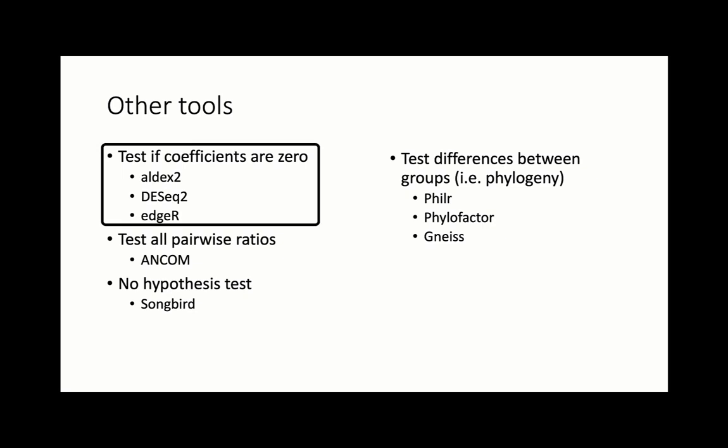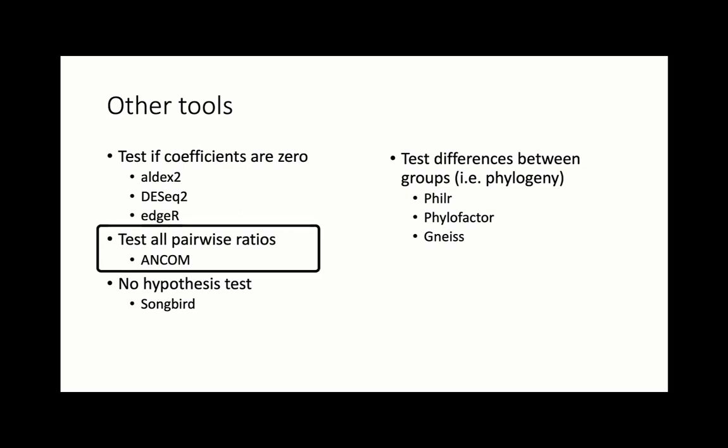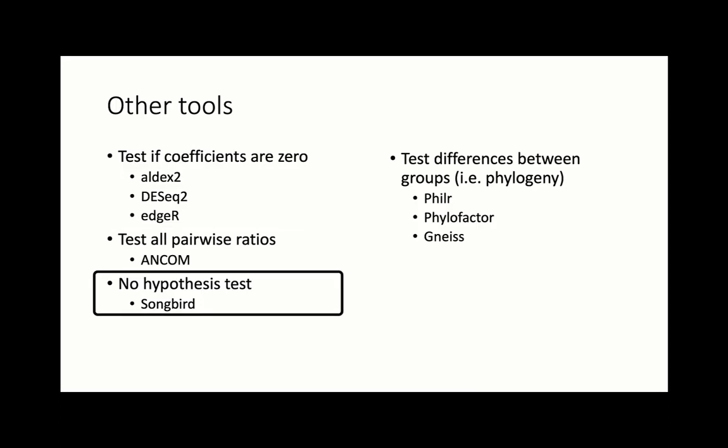While much of the content in this lecture is based on the architecture of Songbird, it is important to note the differences across differential abundance tools. Tools such as ALDEX2, DC2, and EDGEAR will test to determine if the regression coefficient is equal to zero—essentially testing if the microbial abundance has changed relative to the average microbial abundance, with the underlying assumption that the average microbial abundance has not been altered across experimental conditions. ANCOM, on the other hand, will test all pairwise ratios of microbes with the assumption that few microbial species have changed in abundance. There are also tools such as Phylar, PhylarFactor, and NICE that are designed to test differences between groups of microbes, which can be especially useful when testing differences between phylogenetic clades.